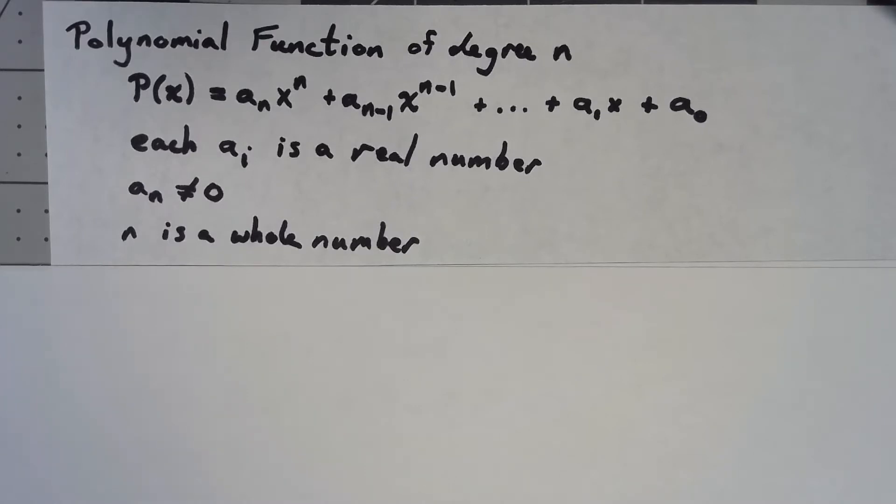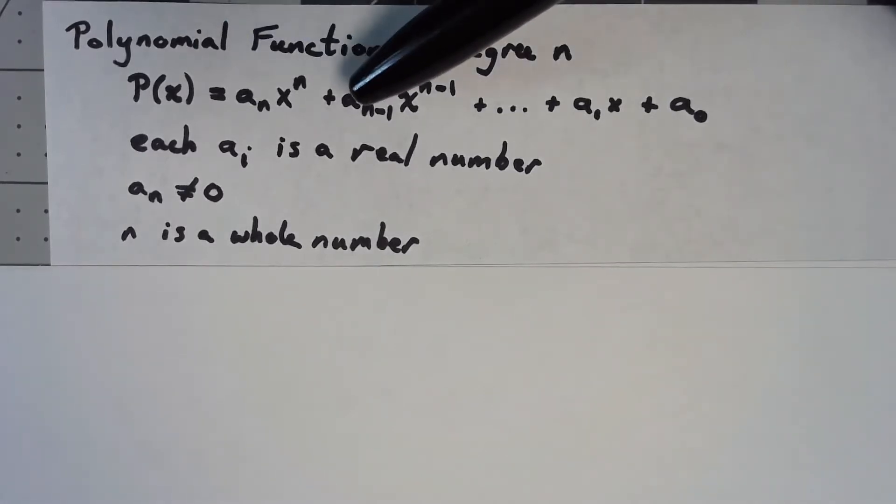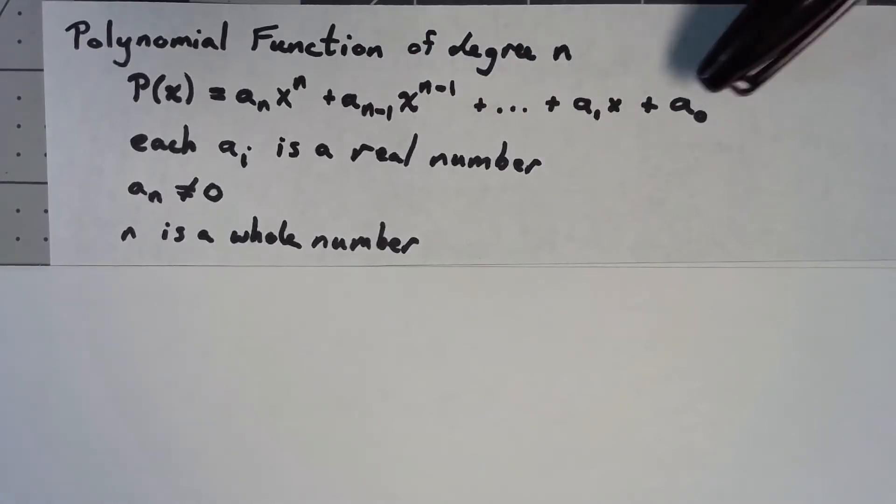Now you should remember what a polynomial is. Here's a formal definition. We have a function of the form a_n times x to the n plus a_{n-1} times x to the n minus 1 all the way down to a number times x then a constant.